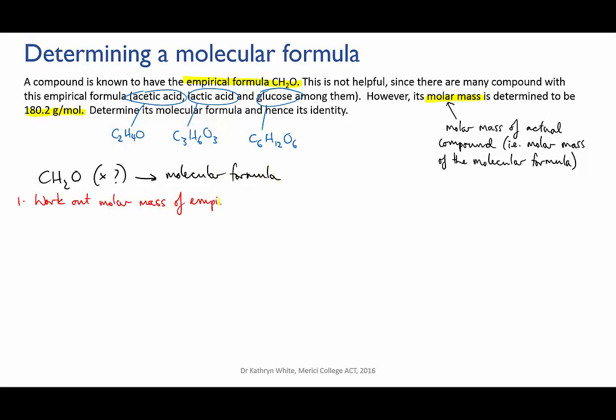What we need to discover is what factor should we multiply the empirical formula by to get the molecular formula? Well, let's work out the molar mass of the empirical formula to start off with. That's 12.01, one carbon, plus 2 times 1.008, that's two hydrogens, plus 15.999 for the oxygen, which gives us 30.025 grams per mole.